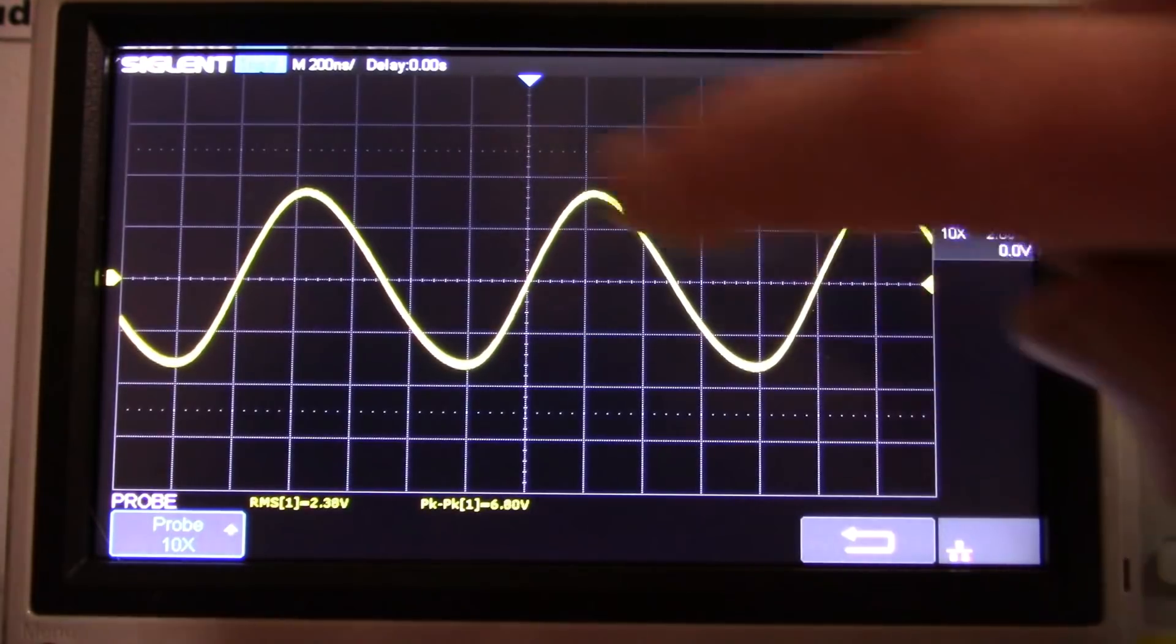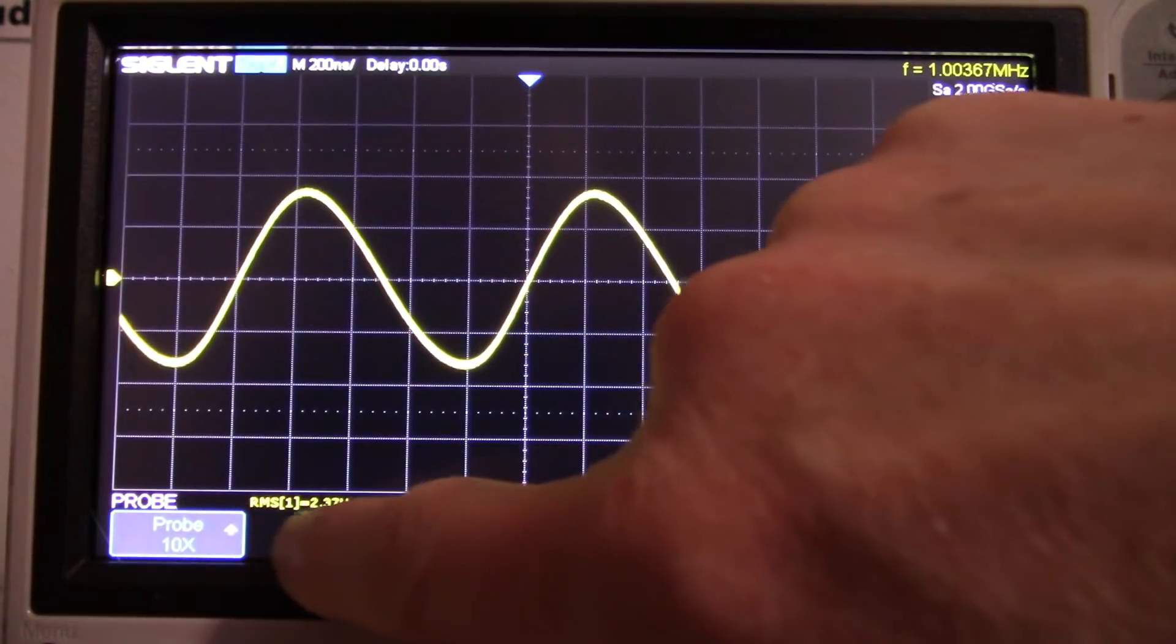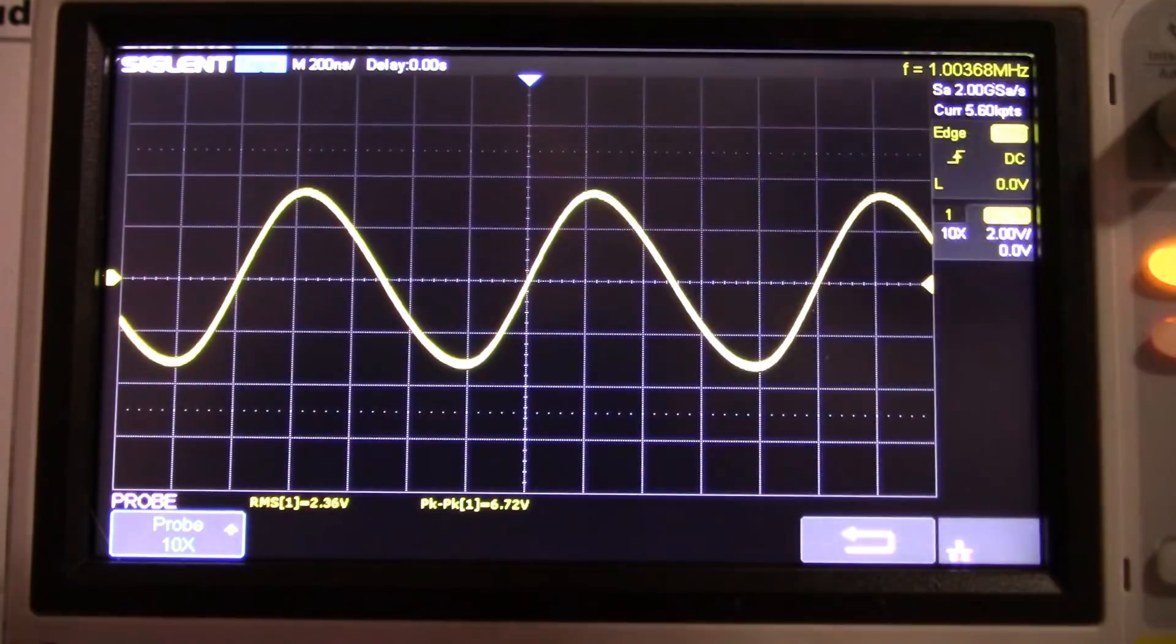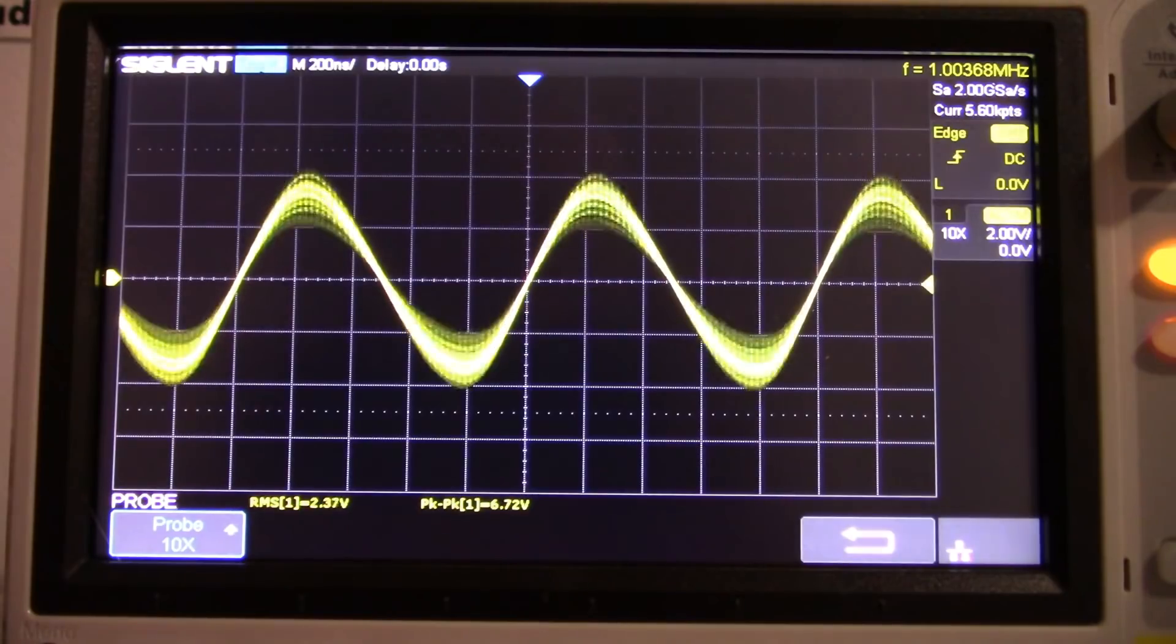So with the antenna connected I'm getting a pretty nice signal here. About 2.4 volts RMS or just shy of 7 volts peak to peak.